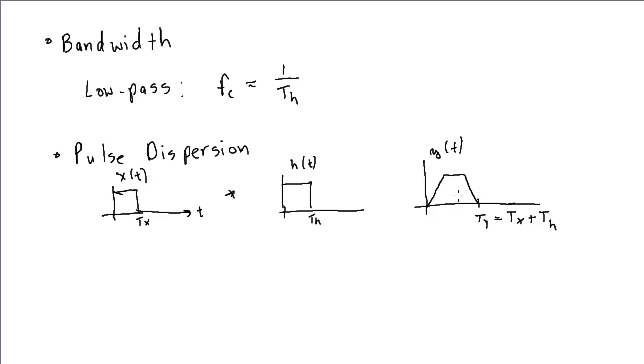So, the output pulse is wider than the input pulse by the time constant of our system. This becomes important when we're transmitting square waves of information down a channel or through a system with a particular impulse response. In order to, because of this pulse dispersion, the output pulses will be wider than the input pulses, and to avoid,